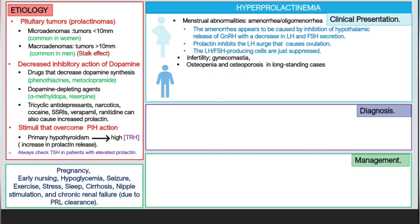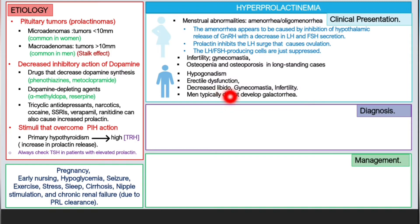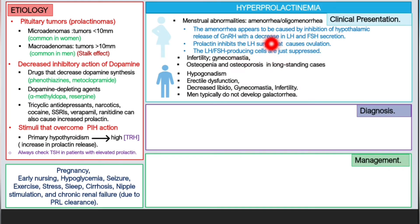In men, presentation includes hypogonadism, erectile dysfunction, decreased libido, gynecomastia, and infertility. Importantly, men do not typically have galactorrhea. Galactorrhea is a very important feature in women with hyperprolactinemia.